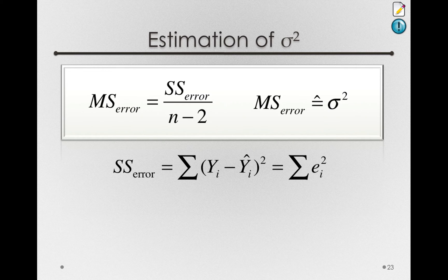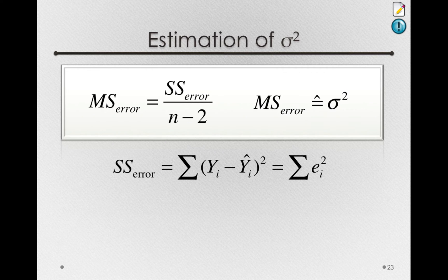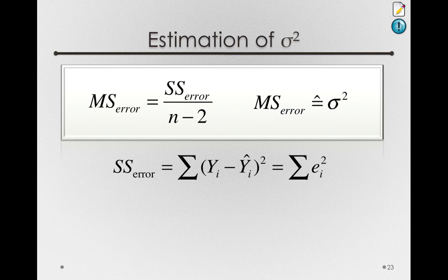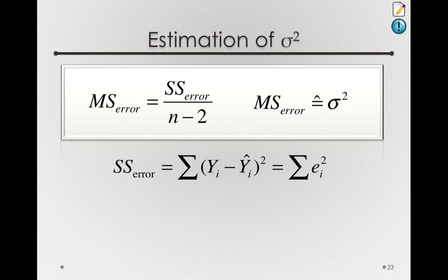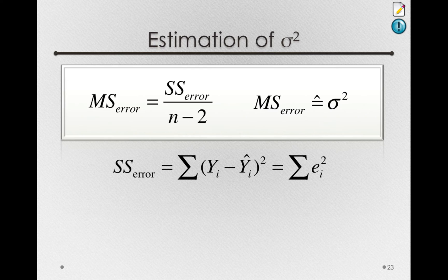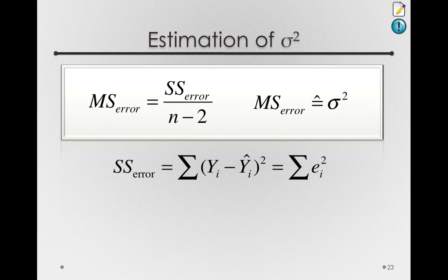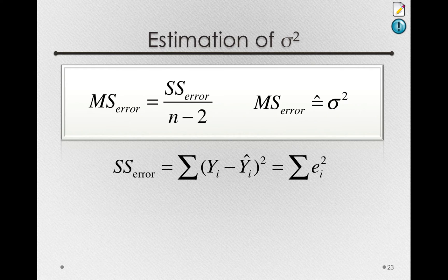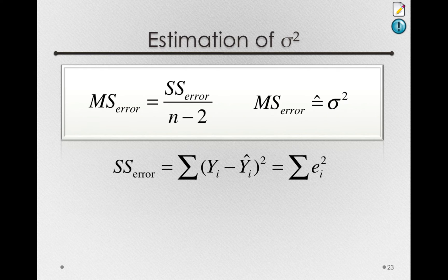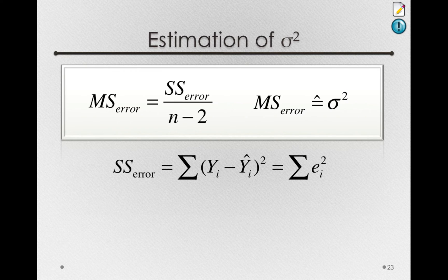Now note that this variance estimate depends on the assumption that error in the population is the same at every level of x. This is known as the assumption of homoscedasticity. That's just a big word for really a simple concept. That variance, or error, doesn't depend on the level of x. This is the analogous assumption in regression to the homogeneity of variance assumption when we have mean structure models.